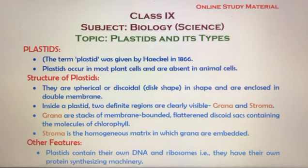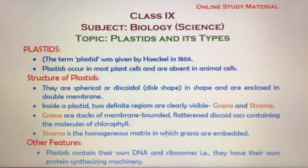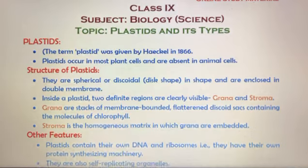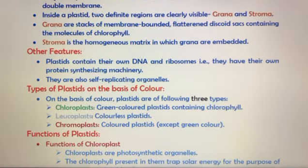The stroma is the homogenous matrix in which the grana are embedded. It is the background fluid in which the grana are present. These are the key structural features of plastids.